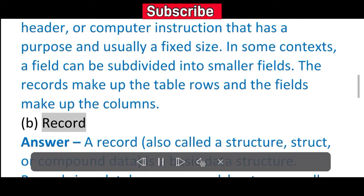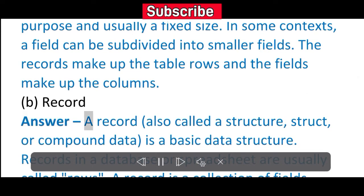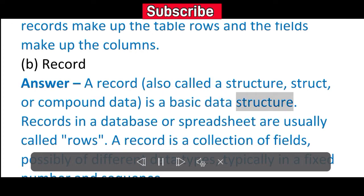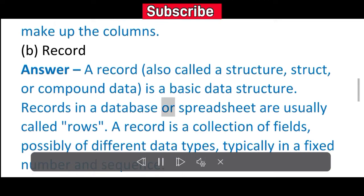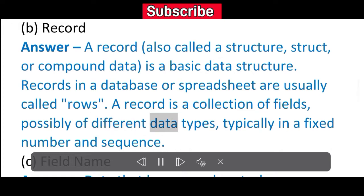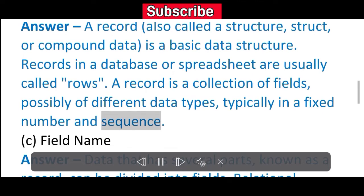B. Record. Answer: A record, also called a structure, struct, or compound data, is a basic data structure. A record is a collection of fields, possibly of different data types, typically in a fixed number and sequence.